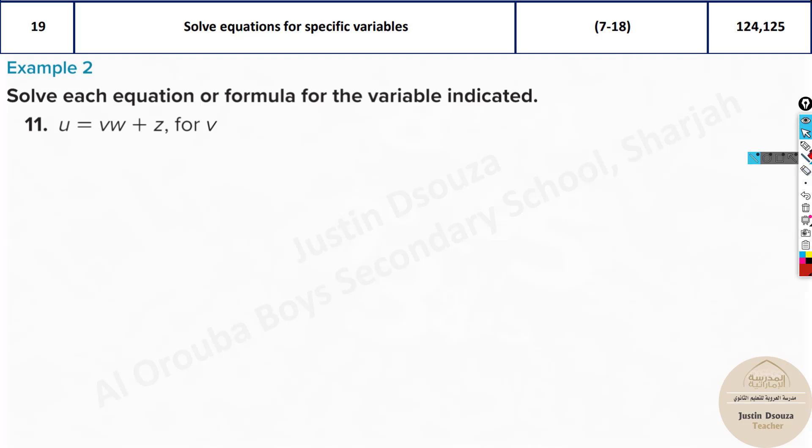I will just do this one over here because there are three variables here. The given question is over here. You need to solve for V. So take everything else to the other side. We have to keep V alone. I will have U minus Z equals VW. Now take W to the other side. It will be U minus Z divided by W equals V. This is the answer. But if you want to simplify further, it will be U by W minus Z by W. But this is more preferred answer.